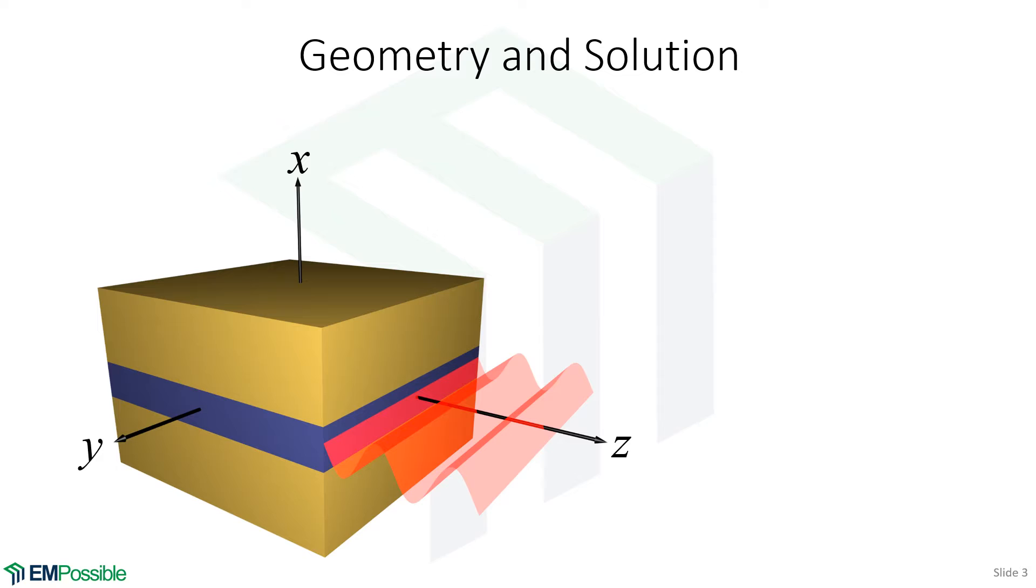Here's a picture of a slab waveguide, and I've pulled the propagating mode outside of the slab just so we can see it. We are letting our mode propagate in the Z direction. The Y direction is perfectly uniform.